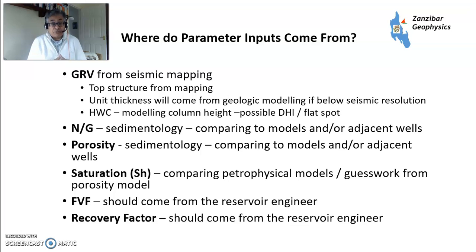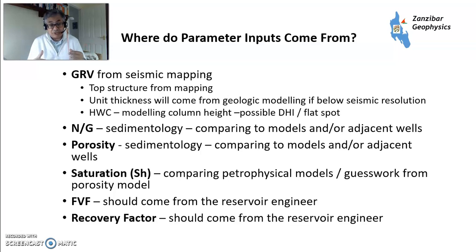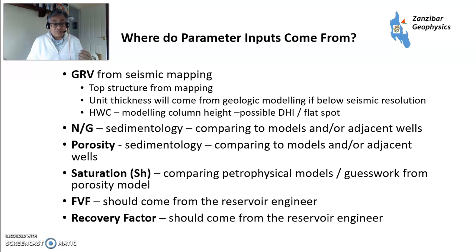Where do you get the inputs? Gross rock volume comes from seismic mapping — top structure from the mapping, unit thickness from geological modeling below seismic resolution, around 100 meters. Hydrocarbon-water contact comes from column height modeling, and possibly from a DHI flat spot. Net to gross comes from sedimentology, porosity from sedimentology, comparing everything to adjacent wells to give you a distribution of what's possible. Saturation comes from petrophysical models, related to some extent to the porosity model. Formation volume factor comes from the reservoir engineer depending on depth of burial and fluid type, and recovery factor also from the reservoir engineer.